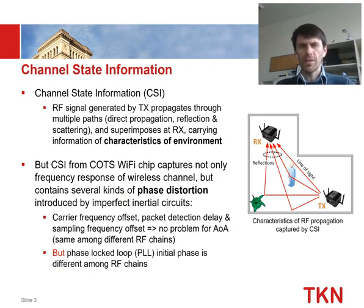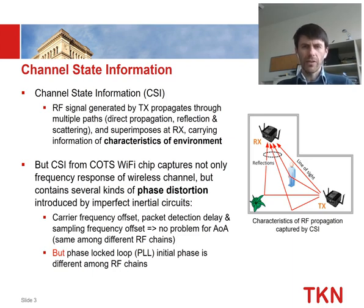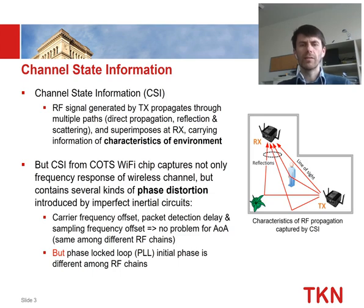Unfortunately, if you capture channel state information from COTS Wi-Fi hardware, you not only capture the frequency response of the wireless channel, but it also contains several kinds of phase distortions due to imperfect circuits. The good news is most of them — like carrier frequency offset, packet detection delay, and sampling frequency offsets — are the same among different RF chains, so they do not complicate angle-of-arrival estimation. The only distortion that creates problems for AoA is the phase-locked loop initial phase, which is different for different RF chains.